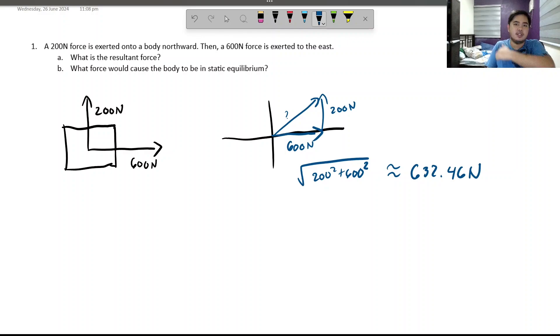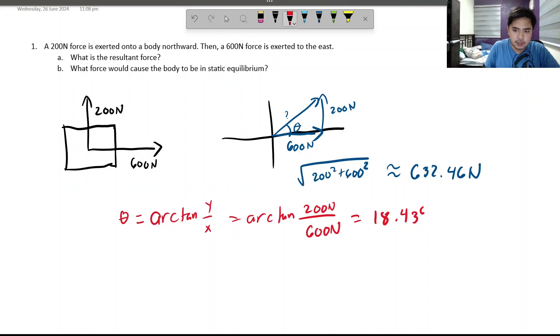The answer is around 632.46N. So that's the magnitude. What is the direction? Well, we know that it is north of east since it is the angle right here. But what is the angle? Well, let's use the handy-dandy formula, arctangent of y over x. That is the angle that we're trying to find. So, we're trying to find arctangent of the y, which is 200N, over the x, which is the 600N. Putting that into our calculator will lead around 18.43 degrees.